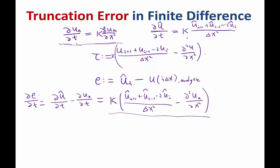Unfortunately, it doesn't work exactly like that. Looking at the right-hand side, the difference from τ is that u_a appears there instead of u. The truncation error is defined by plugging the same solution into two different operators — one analytic, one numeric. But the right-hand side of this error equation plugs two different solutions into two different operators: the numerical solution into the numerical operator and the analytic solution into the analytical operator. There is a step between this and τ that can cause problems if you are not careful, and that's what makes stability very important.